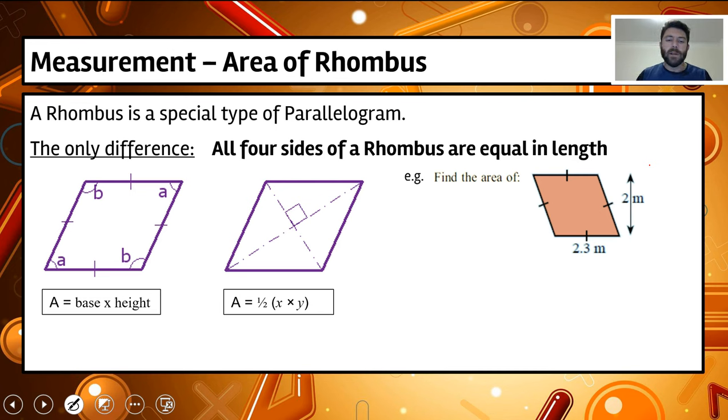Now with a rhombus, there are two ways we can actually calculate the area. We've got the base times height of our parallelogram. We've also got this formula here, which we will see for another shape, which is called a kite. But we'll go with the base by height formula here, because they're the measurements that we've actually got for our shape. So depending on what information we're given, that's what formula we can use.